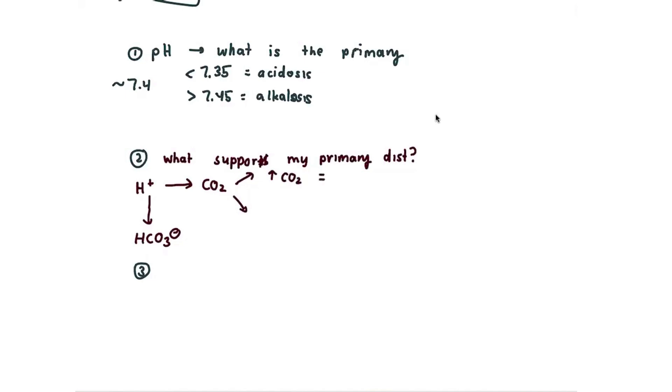What you do need to know though, is when you have elevations in CO2, that is going to be acidosis. And then when you have decreases in CO2, that's going to be alkalosis because you have, in effect, you have less amounts of this H+. Similarly with bicarb, if you have elevated amounts of bicarb, you are going to have an alkalosis. And then if you have low levels of bicarb, you're going to have an acidosis.